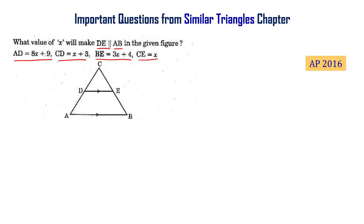In triangle ABC, D and E are points on a line intersecting the triangle. We need to find the value of x such that DE is parallel to AB. Given: AD = 8x+9, CD = x+3, CB = 3x+4, CE = x. This is from the AP final exam 2016. Let us now solve this problem.